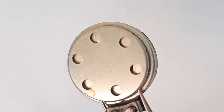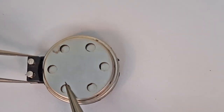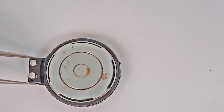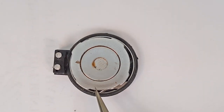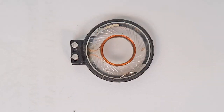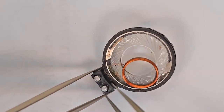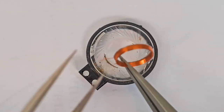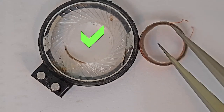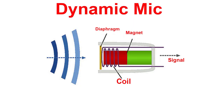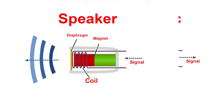Let's open a dynamic mic and understand what's inside. First, let's take off its cover. Beneath it we see its magnet. Below the magnet we see the mic's coil. Let's cut the coil's wire and take it out. Below that we see the diaphragm of the mic. In fact, a dynamic mic and a speaker are two names of the same thing, differing only in their use.